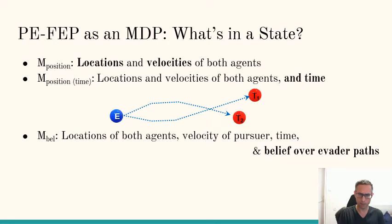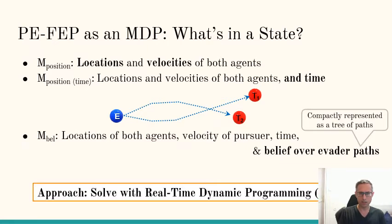So we have three ways to model the problem as an MDP. Now we can just use an MDP solver to solve it. One such MDP solver is RTDP. I should note that our model, the last modeling, the modeling of beliefs, we propose a nice way to compactly represent that belief as a tree of paths, and you can see details about that in the paper.